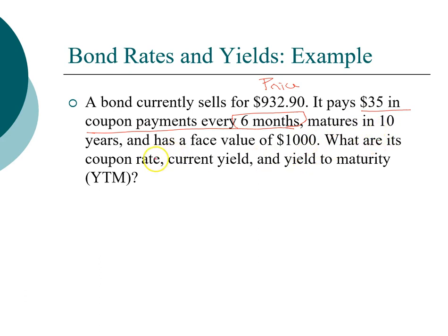We are asked to find its coupon rate, its current yield, and yield to maturity. First, let's take a look at coupon rate. Not surprisingly, coupon rate will be related to coupon. We know it's $35 every six months, so that means you'll get $70 in coupon payments every year. So $35 times 2, two times per year, is $70.